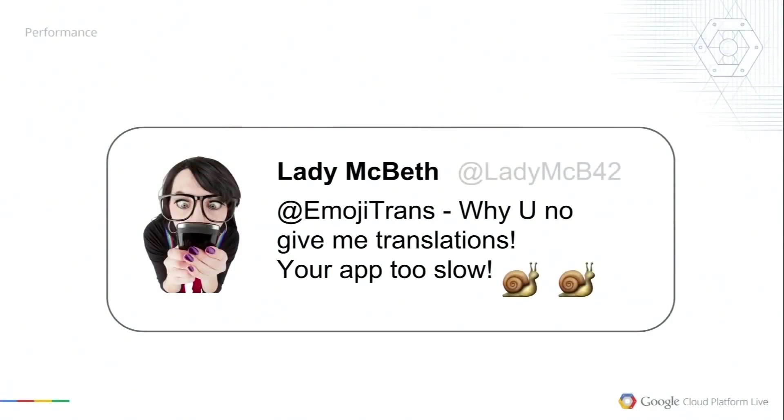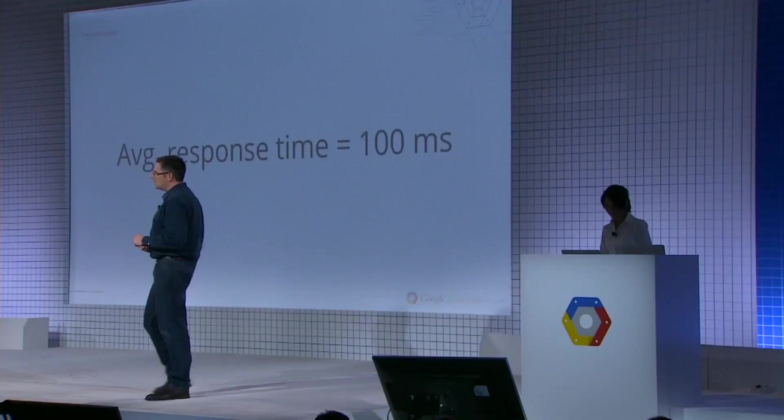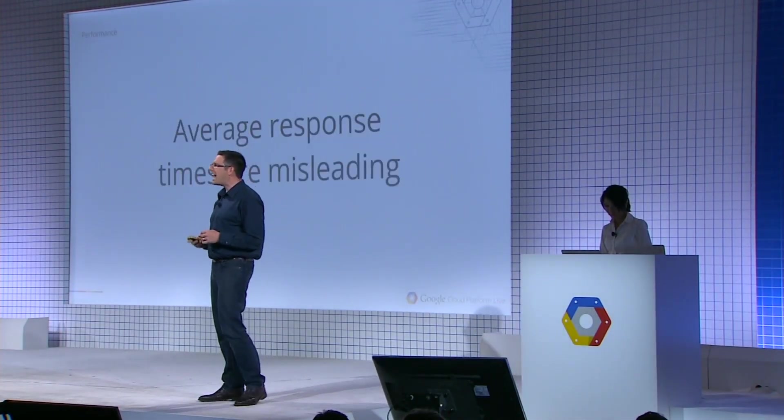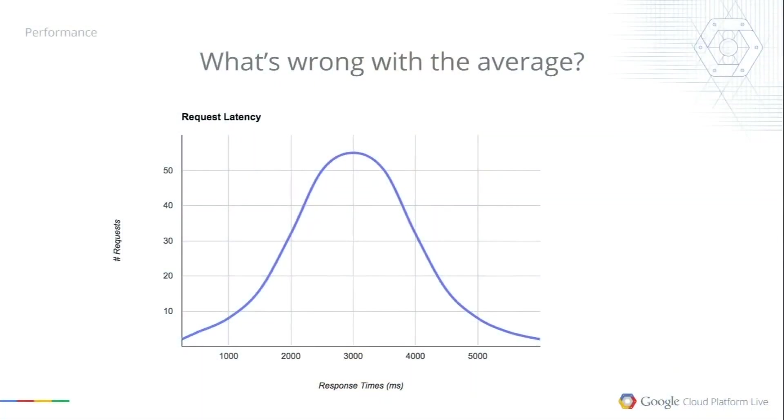Now let's talk about latency. Our application has just been out for a little while, and unfortunately some users are not having the best possible experience. Lady Macbeth is running into a latency issue. Let's walk through tracking down her issue and getting a fix into production. Our average response time is 100 milliseconds — fairly respectable. But averages, when you're talking about the latency of an application, can be very misleading. You might naively expect your latency distribution to look like a standard bell-shaped curve.